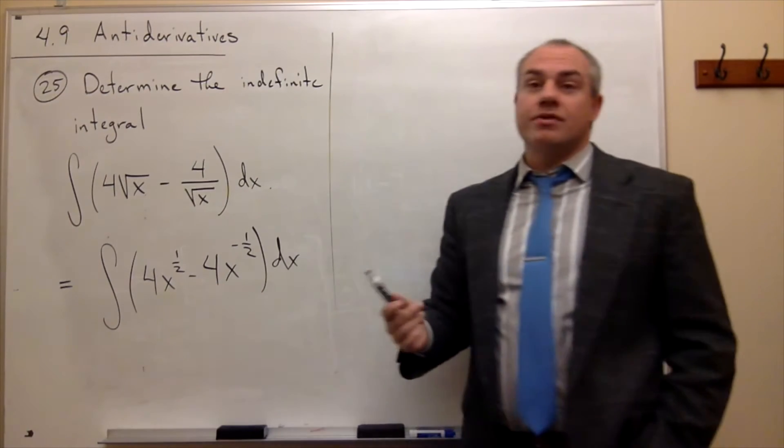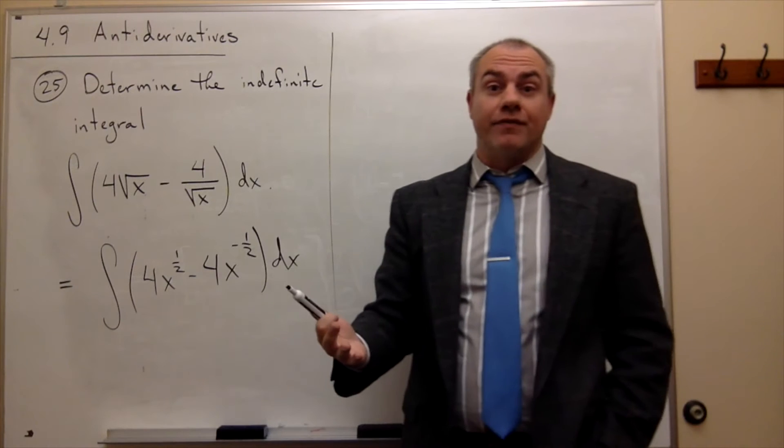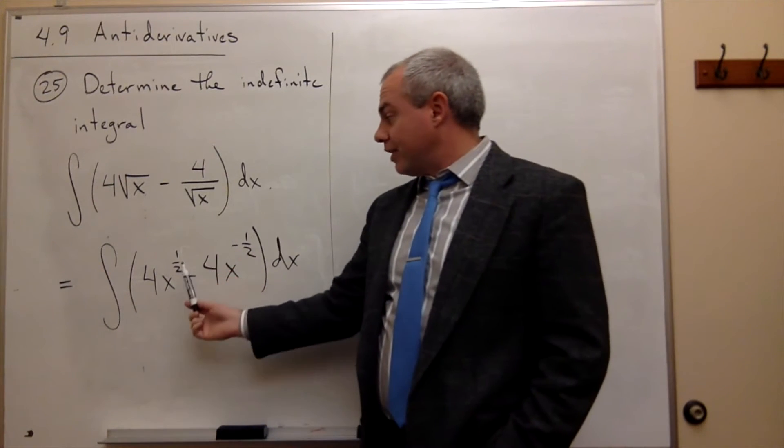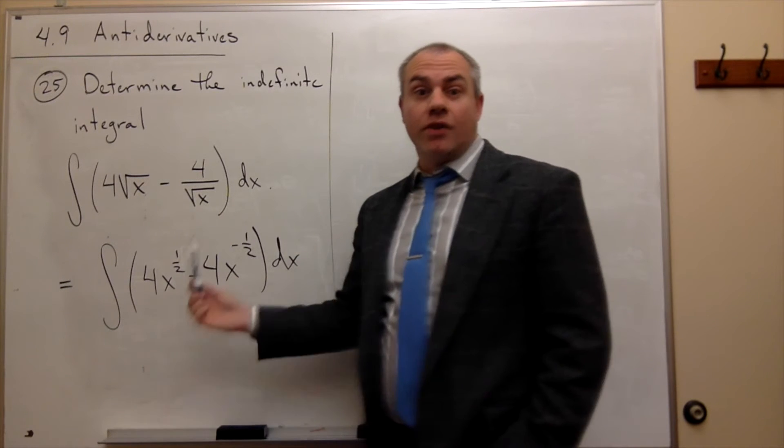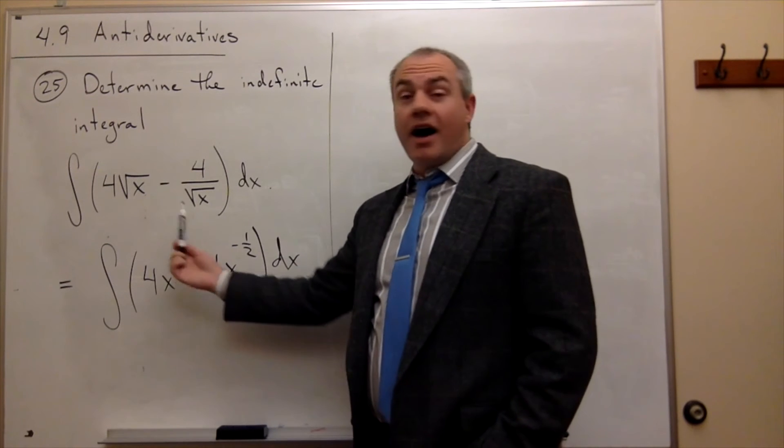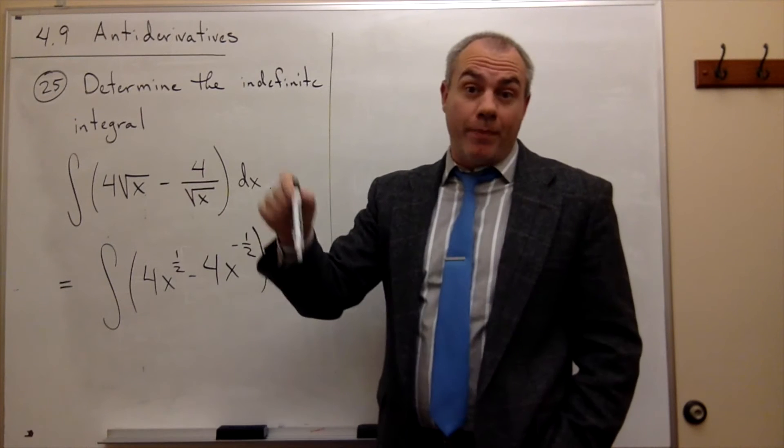Now I can go ahead and use the reverse power rule to find the anti-derivatives of these things. When I take a derivative of something, this number goes down by 1. So if I'm taking an anti-derivative, then I know that this number goes up by 1, and then I divide by the new power.